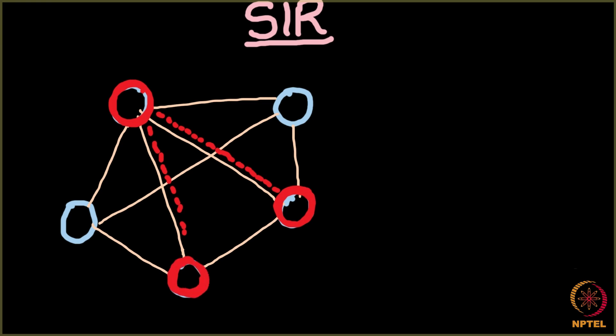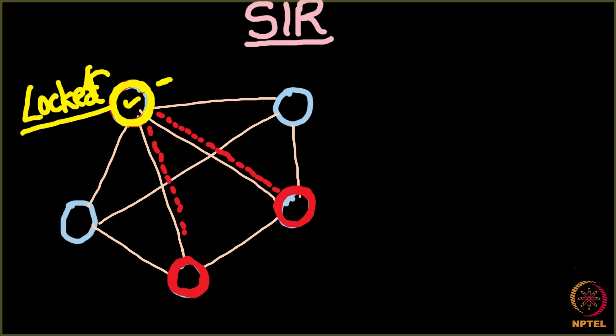After a certain period of time, the original infected node goes back to the recovered or removed state. As soon as a node goes into the recovered state, it is locked — removed from the network, out of question. The two remaining infected nodes might infect some other nodes or might not, and they will eventually get recovered too. So the process will definitely stop.